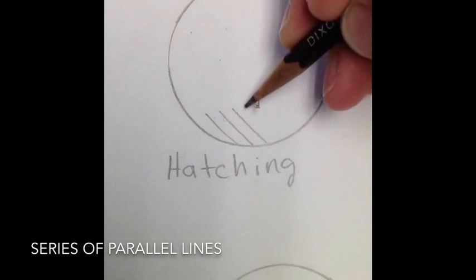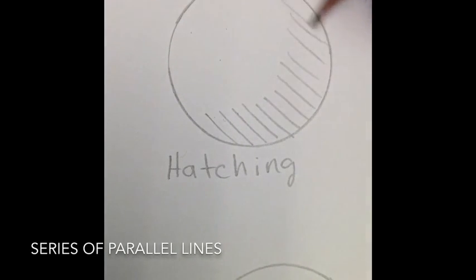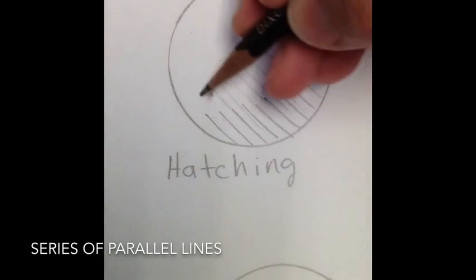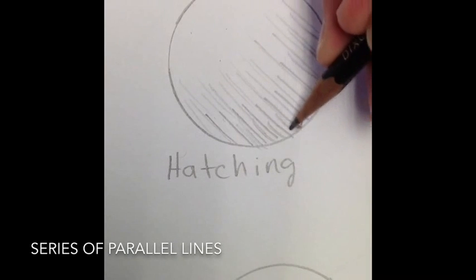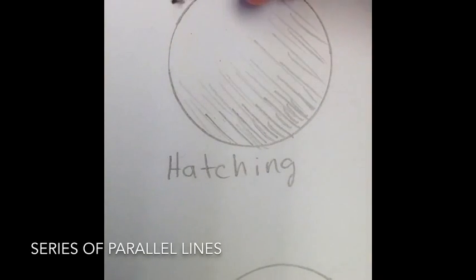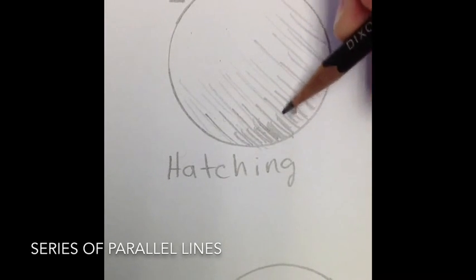Hatching is a series of parallel lines. Think about where you want your light source from. You can apply less pressure or more pressure to create darker values.